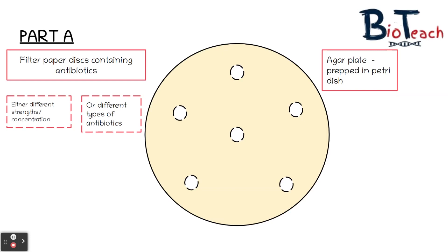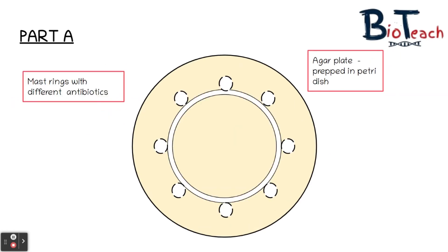The bigger the zone of inhibition, the more effective that chemical solution is. It's really quite important to understand that there's a little bit of maths involved — this is a semi-quantitative method — and there are a large range of health and safety aspects that you need to consider. The other way you might complete Part A is by using mast rings with different antibiotics placed on them. A mast ring is essentially a piece of card that's round with discs around it, usually around eight discs, containing different antibiotics.